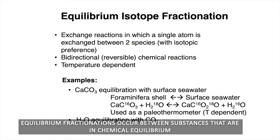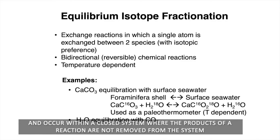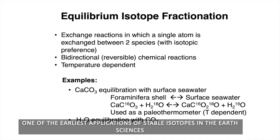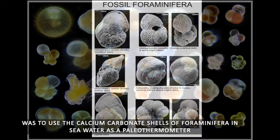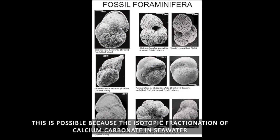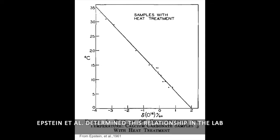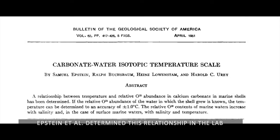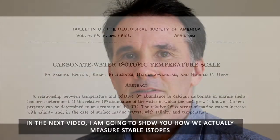Equilibrium fractionations occur between substances that are in chemical equilibrium. These are exchange reactions that are reversible, usually temperature dependent, and occur within a closed system where the products of a reaction are not removed from the system. One of the earliest applications of stable isotopes in the Earth sciences was to use the calcium carbonate shells of foraminifera in seawater as a paleothermometer. This is possible because the isotopic fractionation of calcium carbonate with seawater is a temperature dependent reaction. Epstein et al. determined this relationship in the lab, which was then applied to the fossil record to give paleo seawater temperatures. In the next video, I'm going to show you how we actually measure stable isotopes.